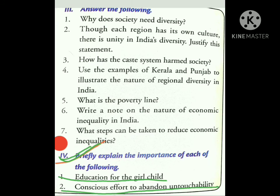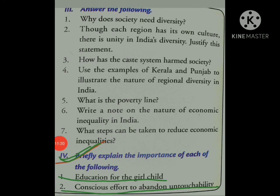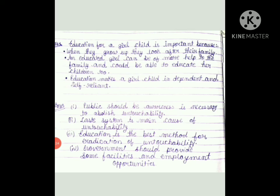Now briefly explain the importance of each of the following. The first question is: education for the girl child. The answer has three points. First: when they grow up, they look after their family. Second: an educated girl can be of more help to the family and could be able to educate her child too. Third: education makes a girl child independent and self-reliant.